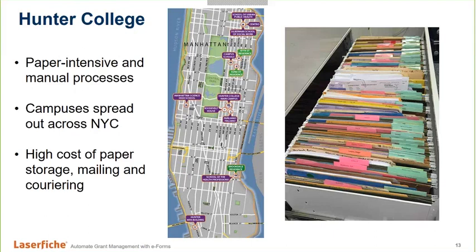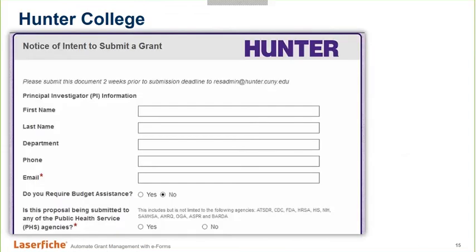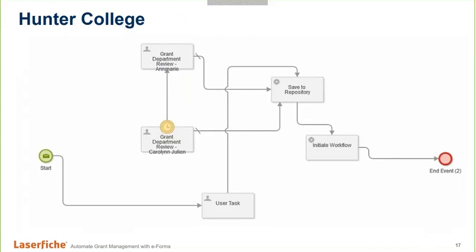These issues drove the college to find a solution in Laserfiche and implement Laserfiche eForms to eliminate paper and improve operational efficiency. They started by converting their paper forms into electronic forms that faculty members could access 24/7 from anywhere on or off campus — no longer any need to courier documents. They could upload proposal documents directly through these forms, which would then be automatically routed to the relevant offices for review through process automation, and then to department chairs and other stakeholders for approval. This eliminated the need for manually compiling proposal packets and saved significant couriering costs, while also reducing turnaround time for proposal preparation.